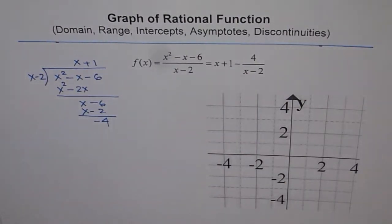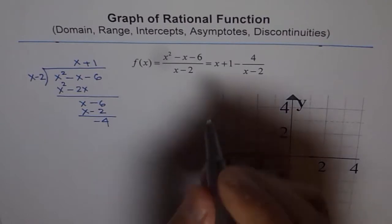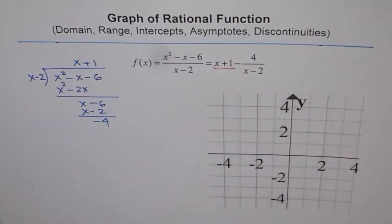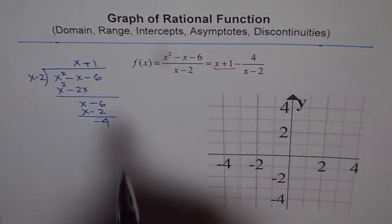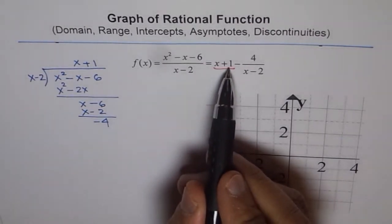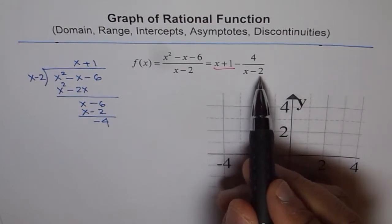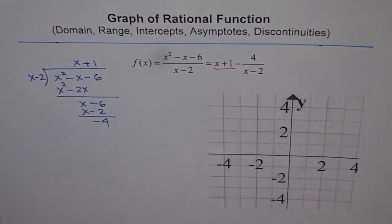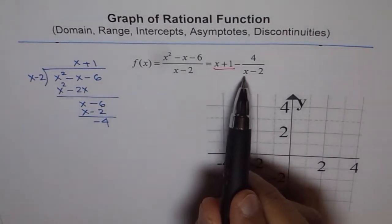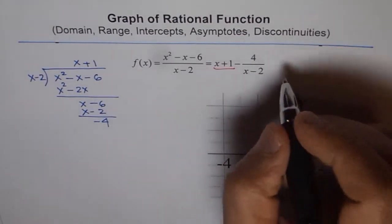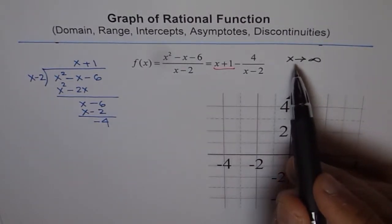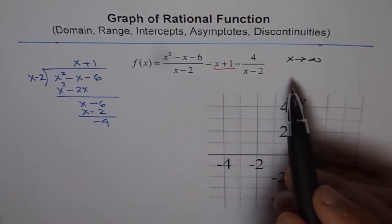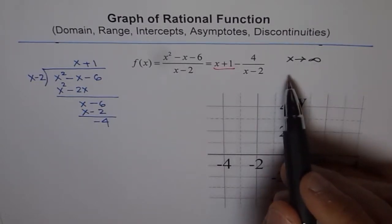So we can write the function as x plus 1 minus 4 over (x minus 2). That is how you get your oblique asymptote. The equation of the oblique asymptote is x plus 1. Our function f(x) equals the line x plus 1, minus 4 over (x minus 2). As x approaches positive infinity, let's analyze that part of the function — it could be positive or negative infinity.